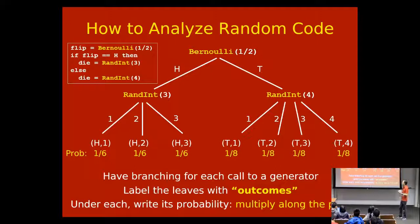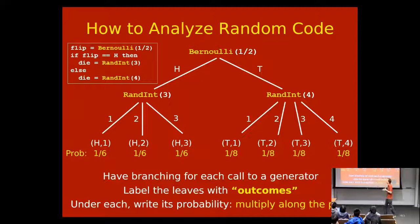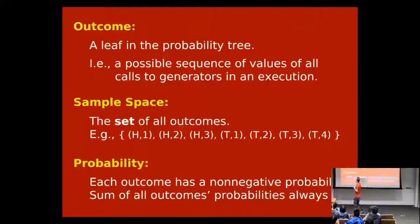Label each outcome with its probability — multiply all the probabilities along the path to that leaf. For heads-1: probability one-half times one-third equals one-sixth. All the heads outcomes have probability one-sixth. The tails outcomes have probability one-half times one-quarter equals one-eighth. These are always non-negative numbers that add up to one. An outcome is a leaf in the probability tree — a sequence of values from all the random number generator calls in one trace through the code.